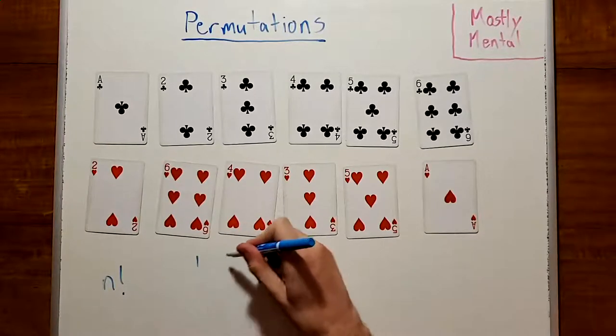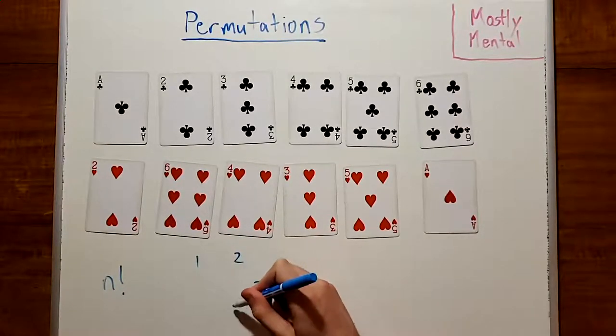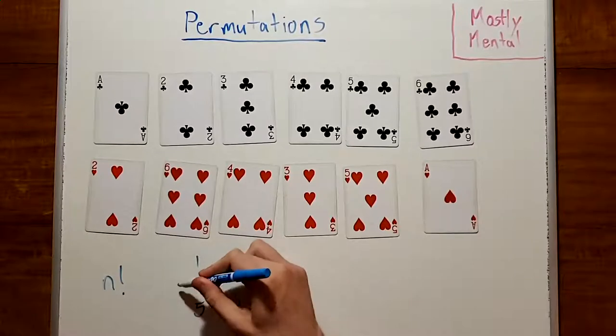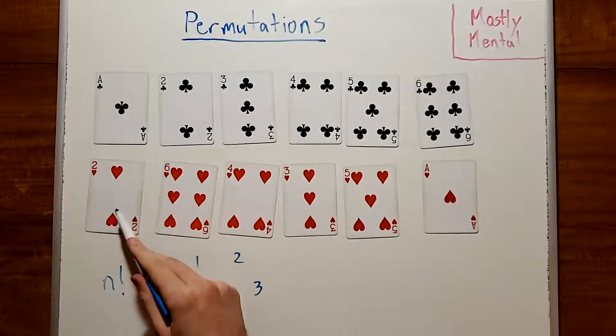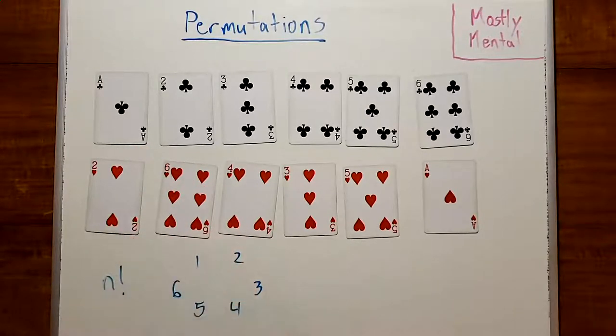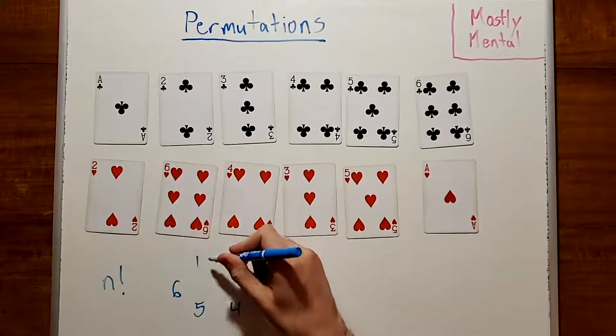So, we'll write the numbers 1 through 6, and we'll connect them based on which numbers get replaced with which others. So, here, 1 gets replaced with 2,